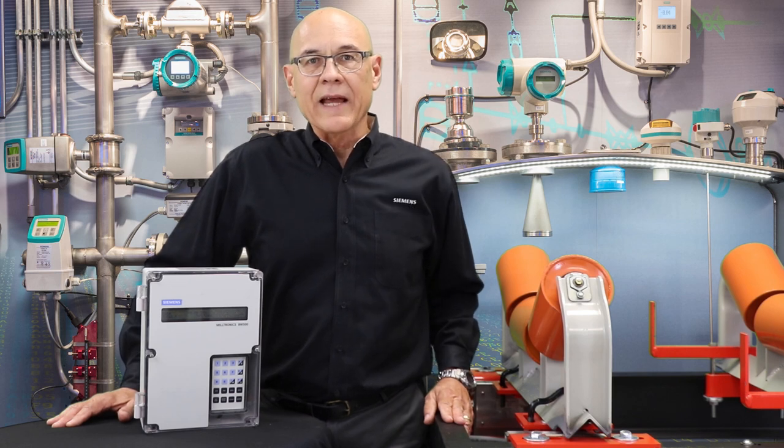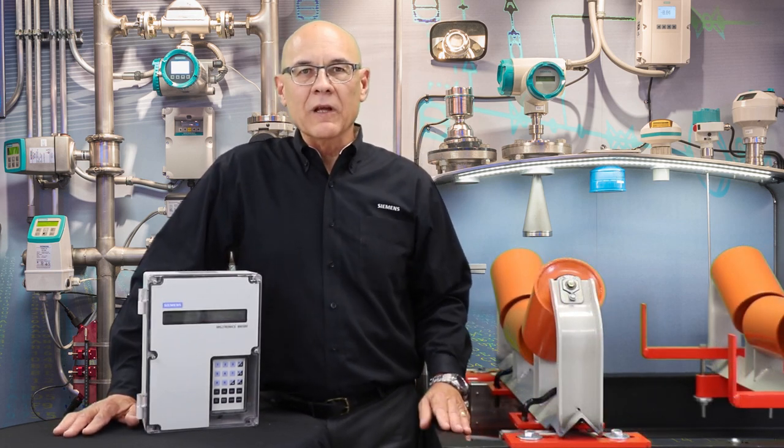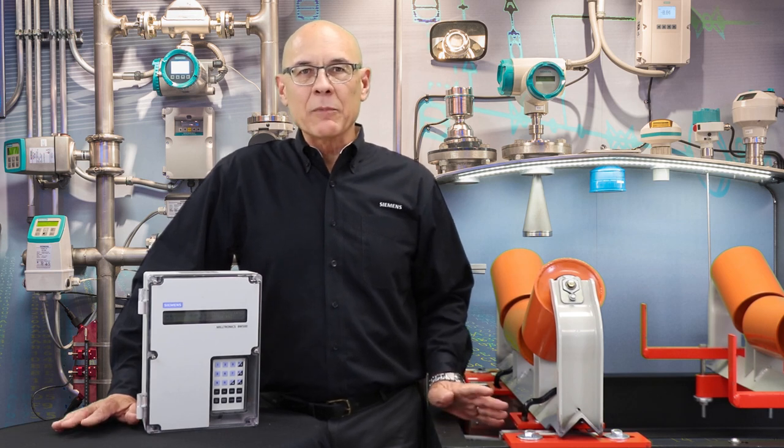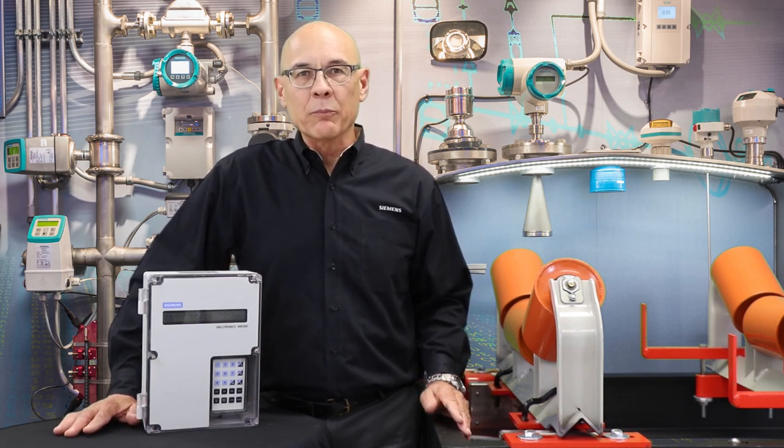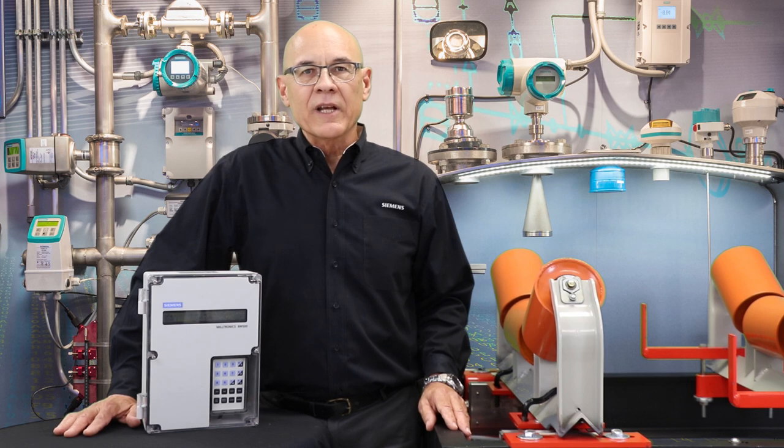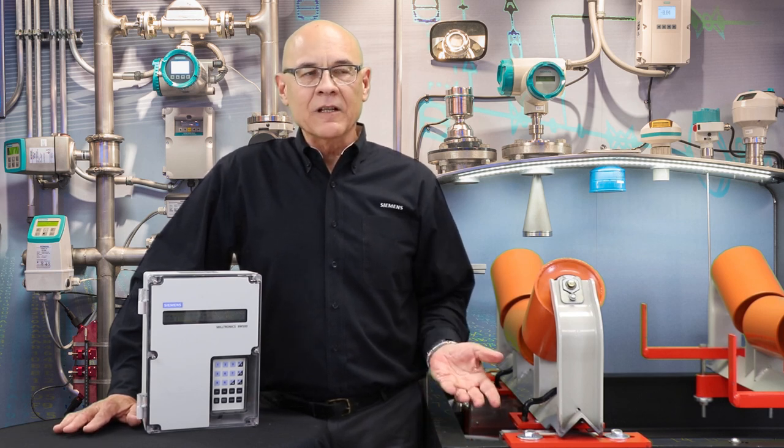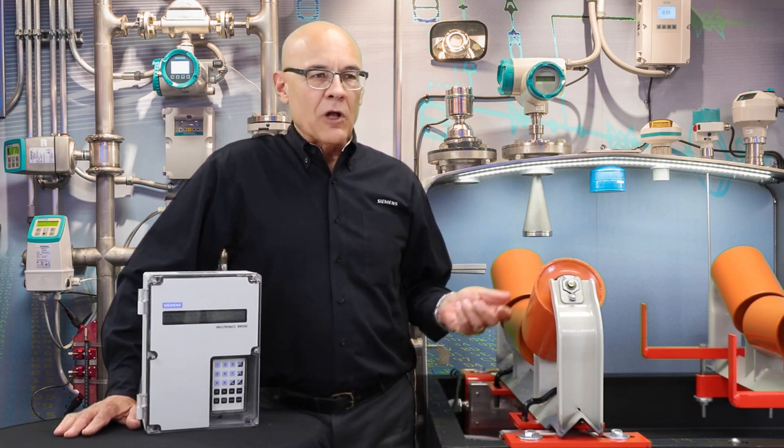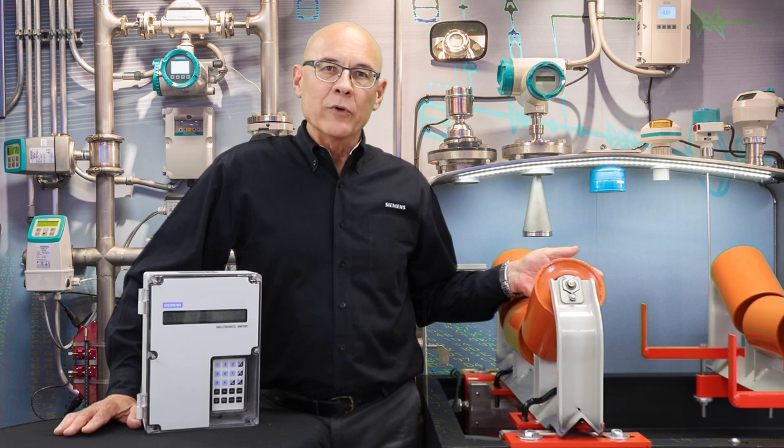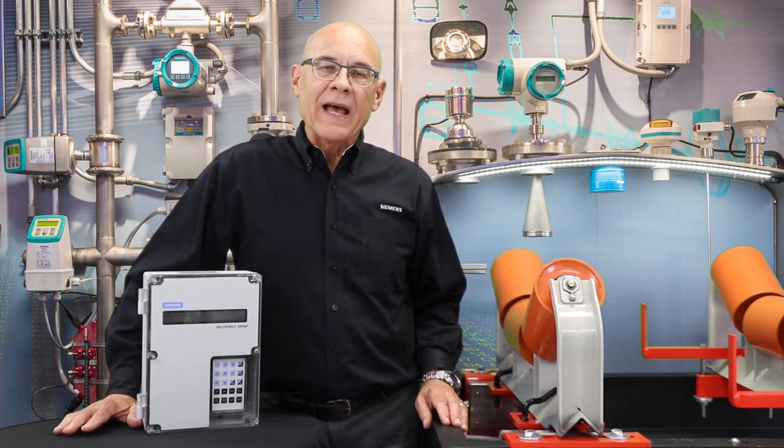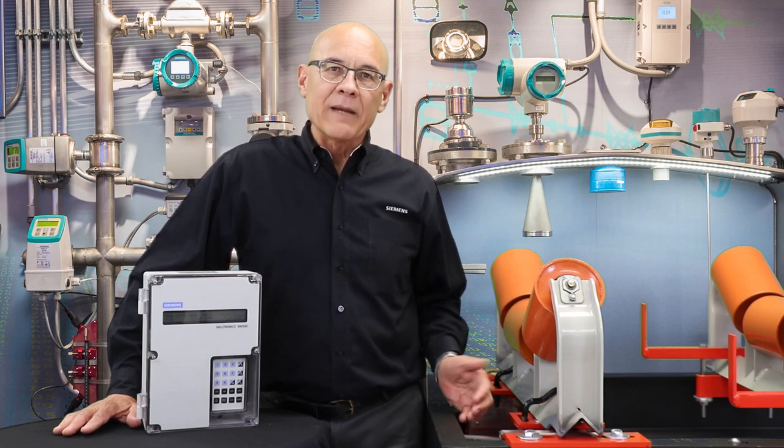These load cell checks can also be used to evaluate other aspects of the installation and maybe find other contributors that are causing problems with the belt scale accuracy. The load cell check should be performed while the conveyor is stopped. The load cell checks basically involve installing a known amount of weight onto the weigh bridge and measuring the load cell signal offset based on that known weight.